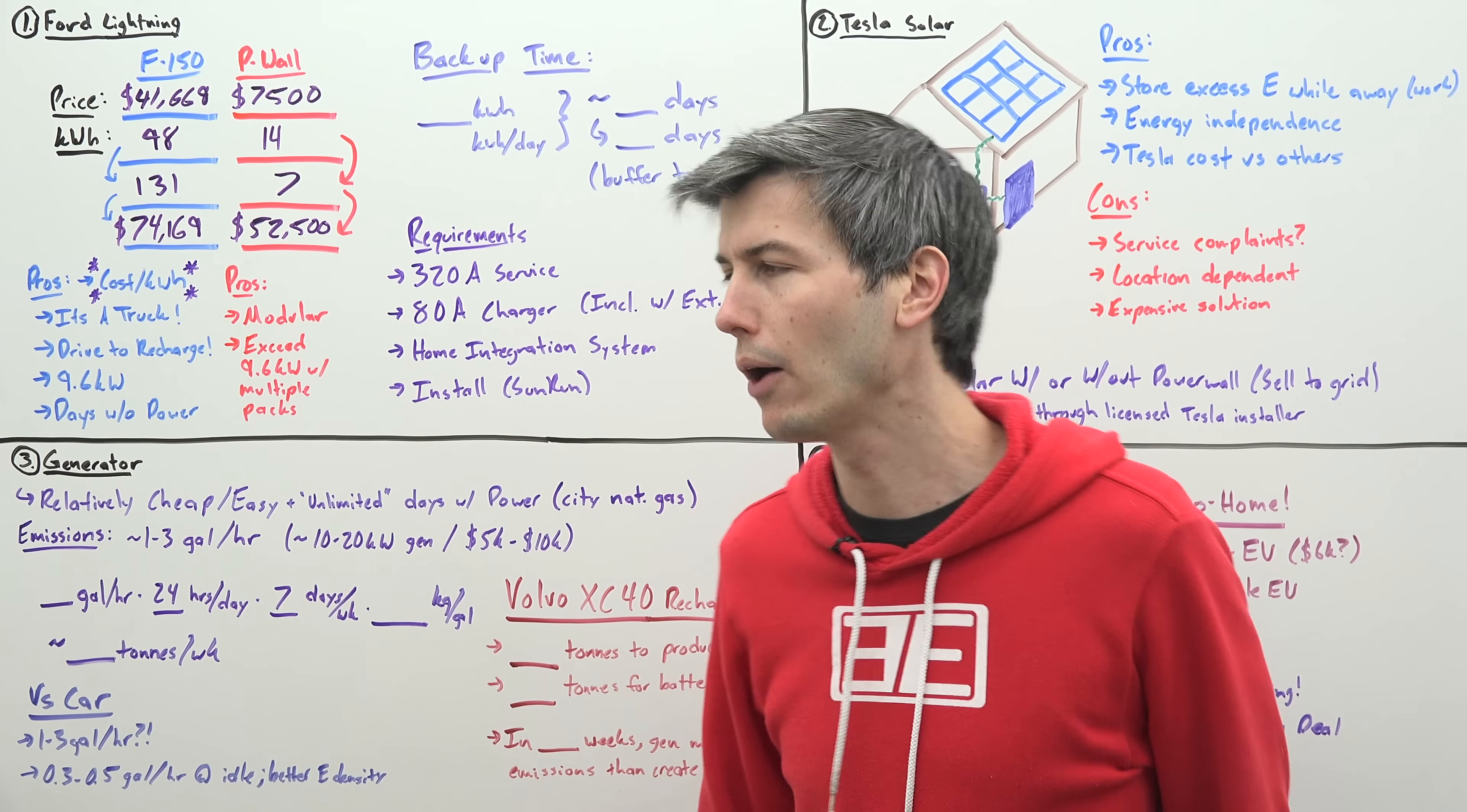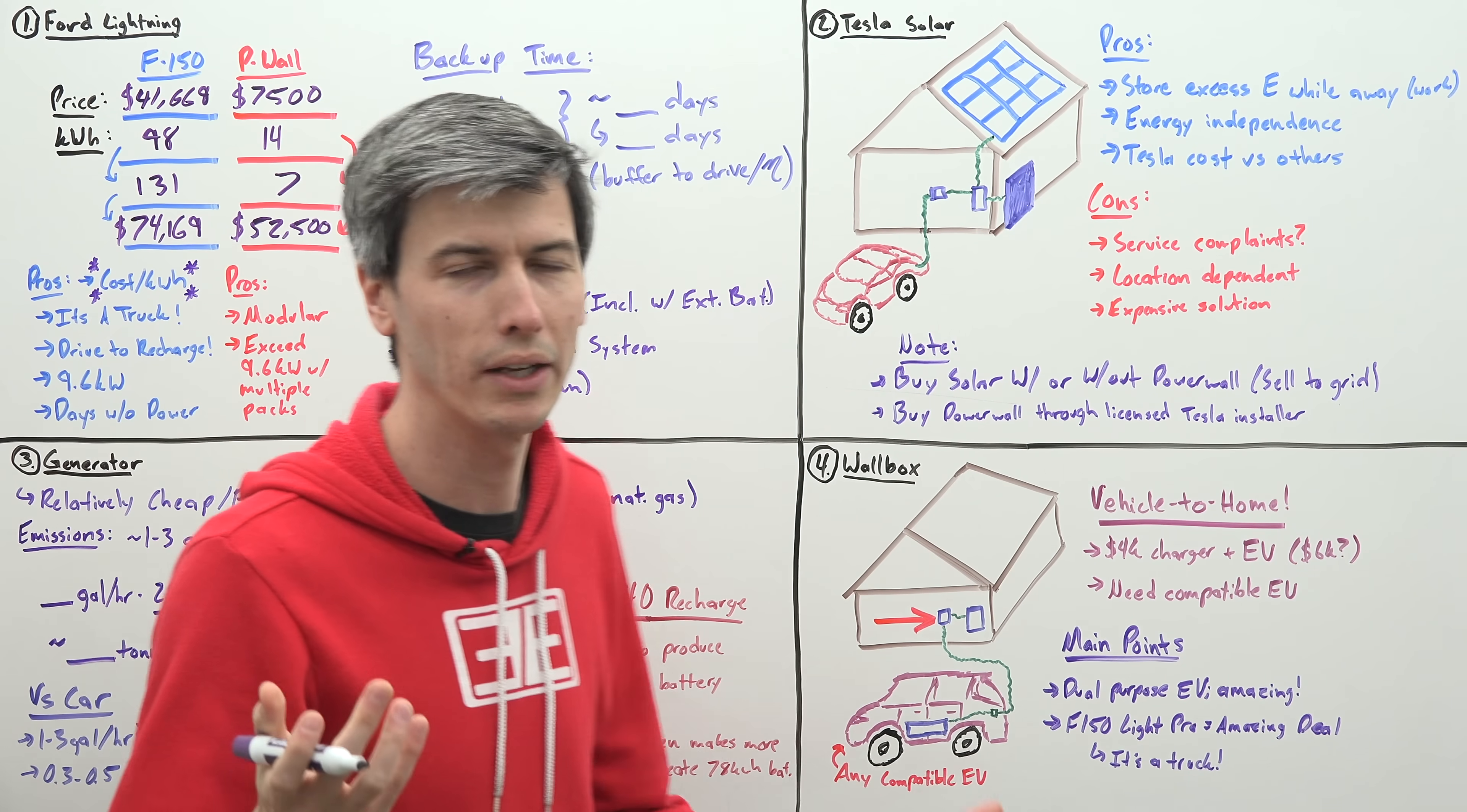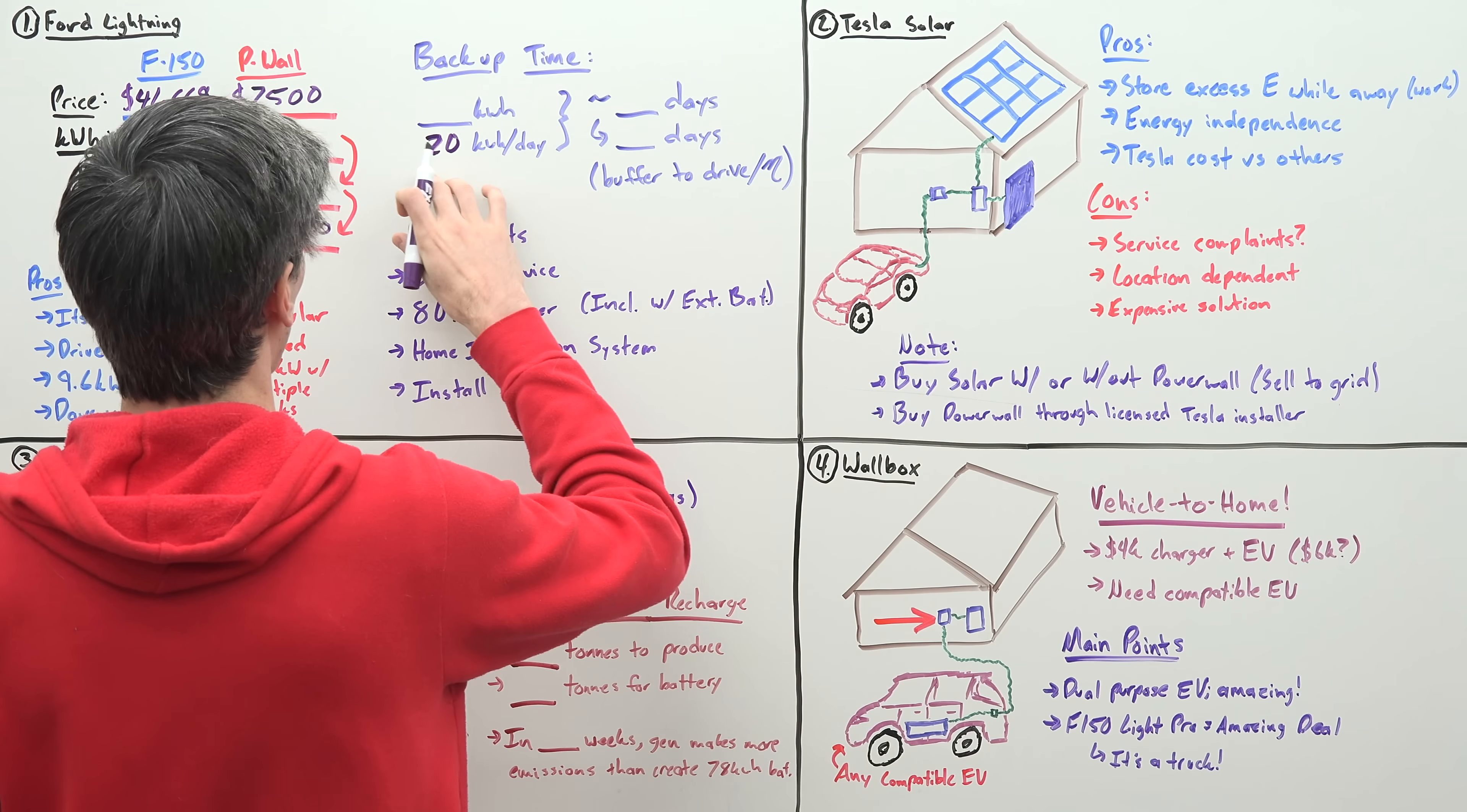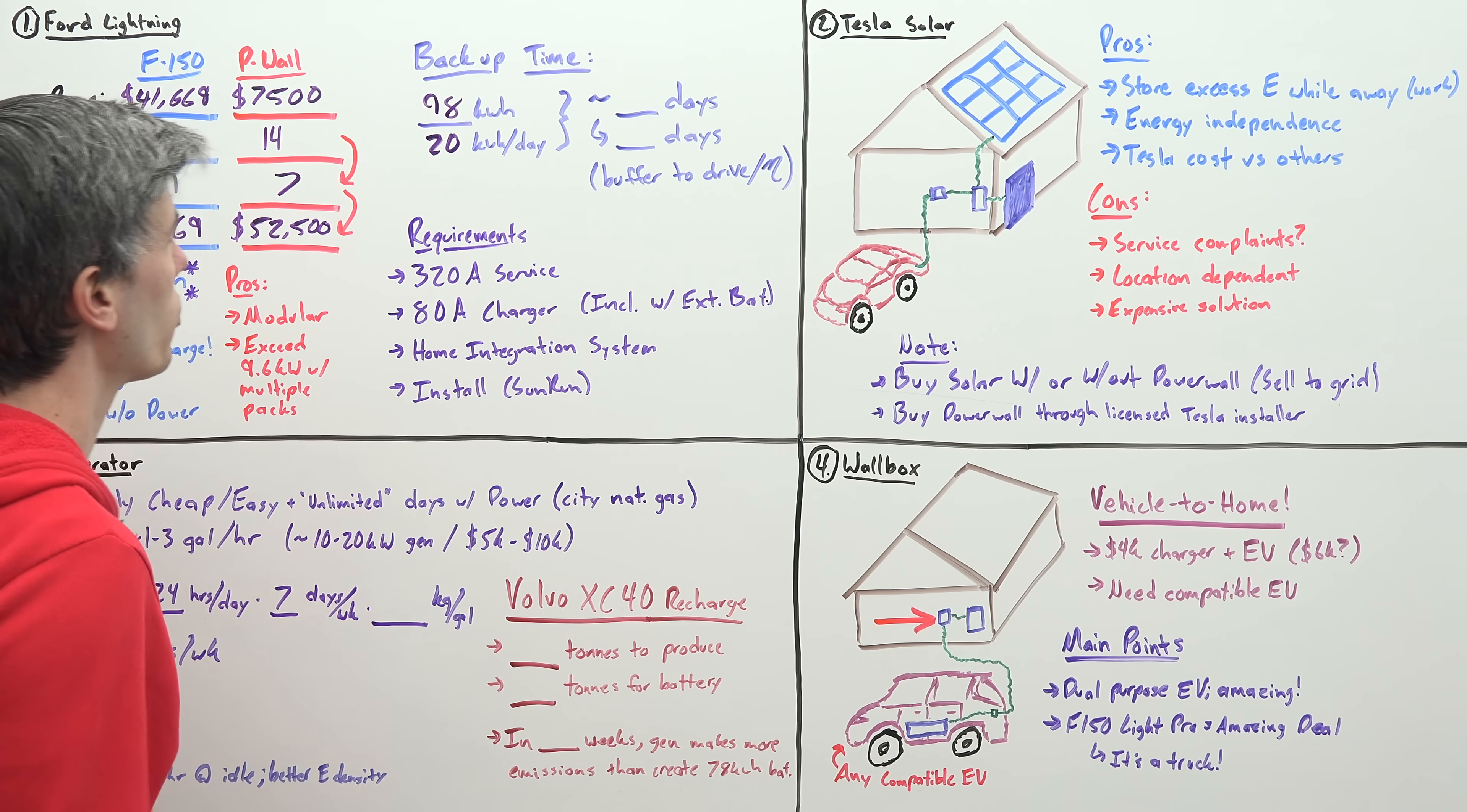So if you're running all kinds of electric appliances within your home, then you can do that if you have several Powerwalls, whereas you may be limited in what you can run with the F-150. So how much time will this F-150 with a 98 kilowatt hour battery pack last you in a power outage? Look at your own power bill. I looked at mine. I use about 20 kilowatt hours per day, and that includes charging my Tesla.